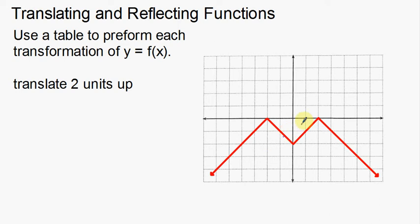This little graph I have down here — this M-looking shape — is a function. If you remember your vertical line test, if I put a vertical line at any point on this function, I only hit it once. So that makes this a function.